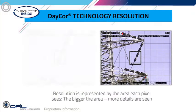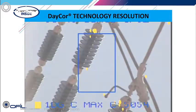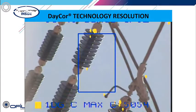DayCor technology offers high spatial resolution. Spatial resolution is the quotient of distance and IFOV — the Instantaneous Field of View, which is the angle subtended by a single detector element on the axis of the optical system. The smaller the IFOV, the more details are detected. DayCor technology features a small IFOV, and as a result, DayCor cameras provide detailed information as seen in these examples.